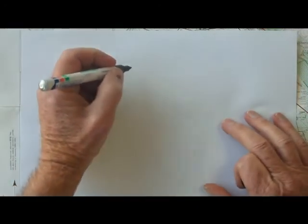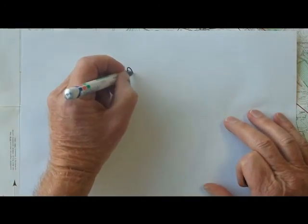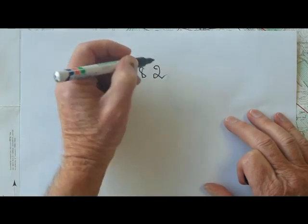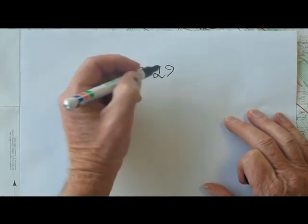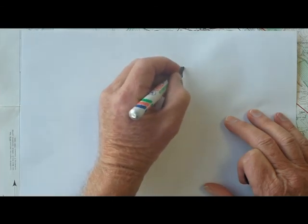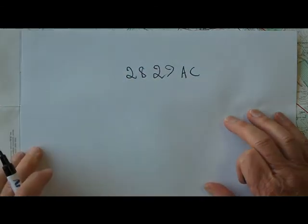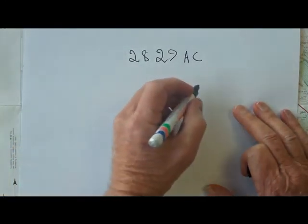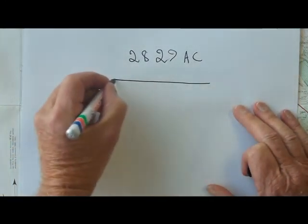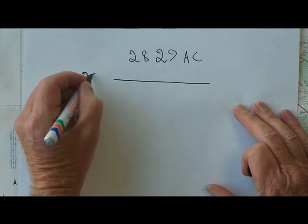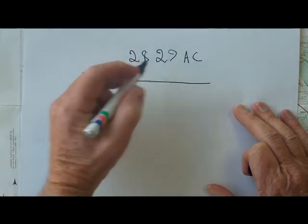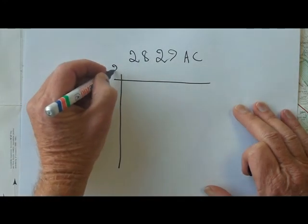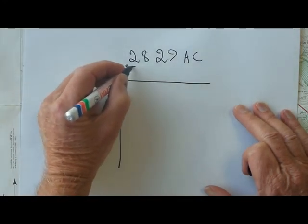Right, so looking at the map reference number, we have 28 degrees south, 29 degrees east, and then the AC we will talk about a bit later on. So what does this mean? 28 is a line of latitude, 28 degrees south. 29 is a line of longitude, 29 degrees east.